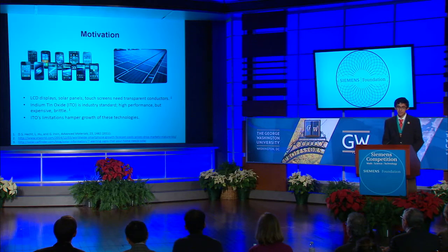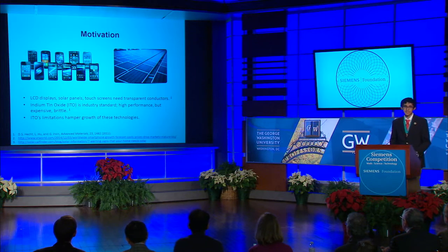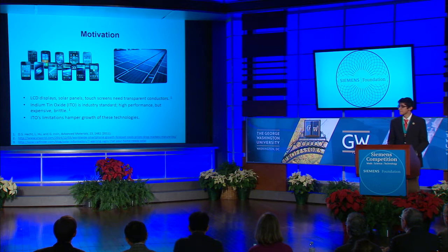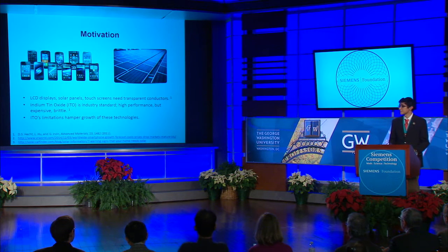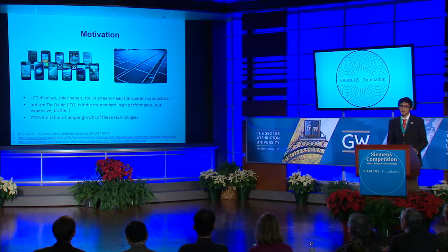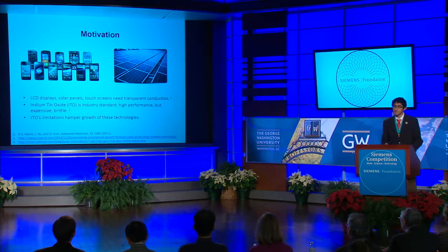Many modern devices, including LCD displays, solar panels, and touchscreens, rely on a class of material known as transparent conductors, which are both optically transparent and electrically conductive. Smartphone touchscreens need to detect electrical charges on fingertips without blocking the light of the display, while solar panels need transparent conductors to separate electrons and holes without blocking sunlight.